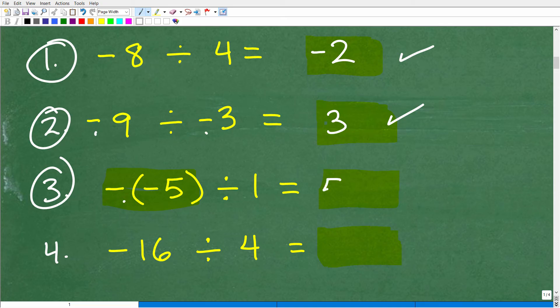So, this problem here really means 5 divided by 1. Positive 5 divided by a positive 1. So, we have a positive divided by a positive. So, our final answer is just positive, positive 5.